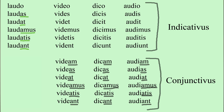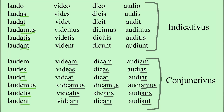In the case of laudare, the subjunctive is: laudem, laudes, laudet, laudemus, laudetis, laudent. So the indicative uses: o, as, at, amus, atis, ant — and the coniunctivus uses: em, es, et, emus, etis, ent. For example: venio ut laudem te — I come in order that I may praise you. Ut laudes amicum tuum — that you may praise your friend. Ut laudet amicum suum — that he may praise his friend. And laudemus — that we may praise.